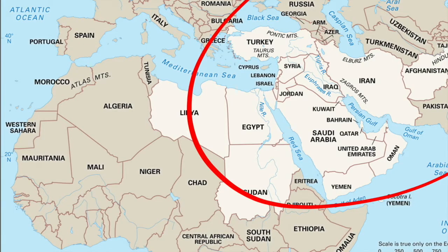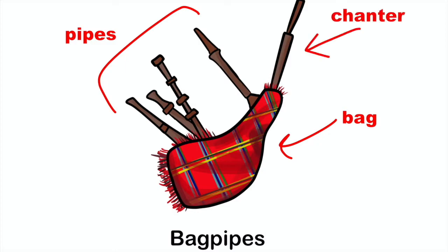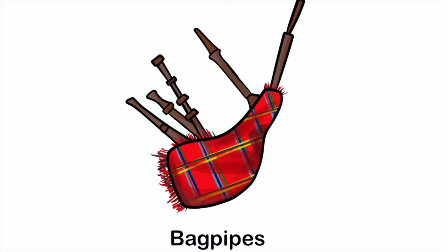Bagpipes are made up of a bag — traditionally animal skin — which maintains the air pressure to produce an even sound, pipes to blow air into, and a chanter, which resembles a flute. By covering different holes in the chanter, the player can change the pitch of the note.